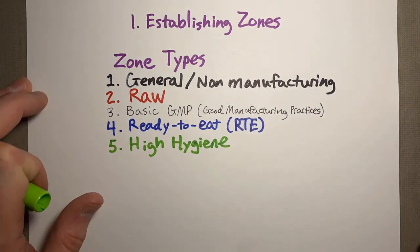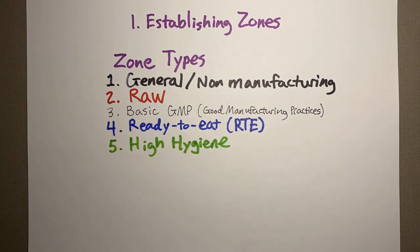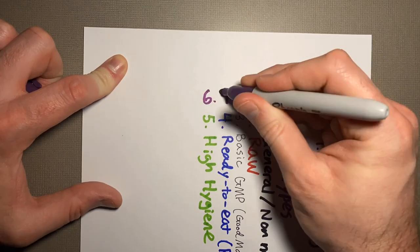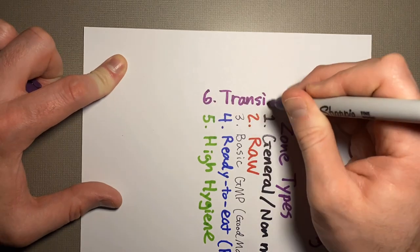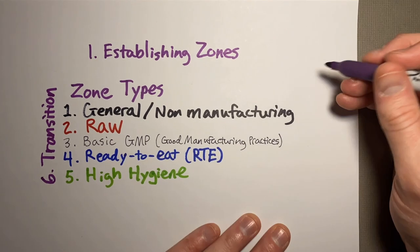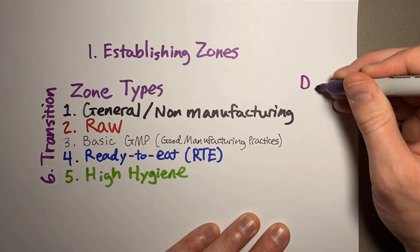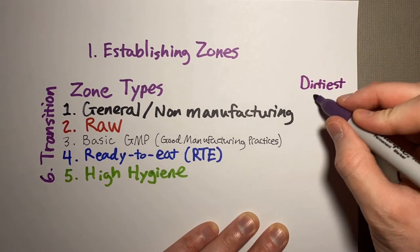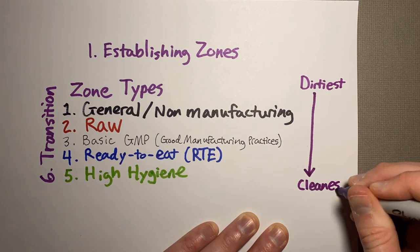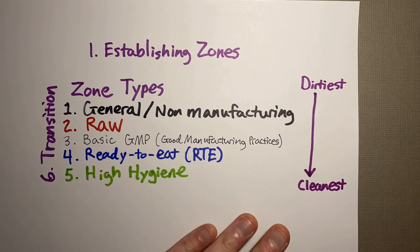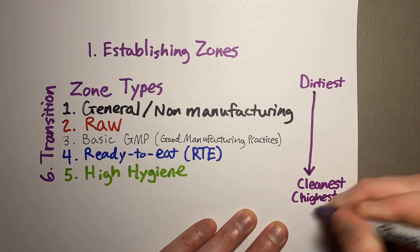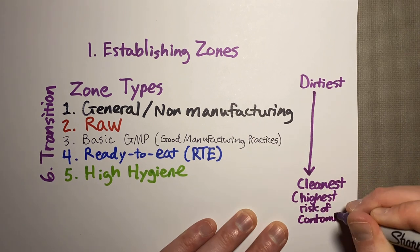You also have transition areas where you are changing between different zones, and you want to make sure you're washing your hands or maybe even changing out shoes. Zones one through five go from the dirtiest all the way to the cleanest areas, so you don't want to be opening up a bathroom straight into a high hygiene area.